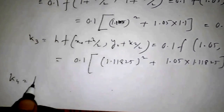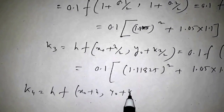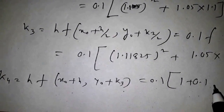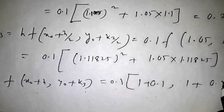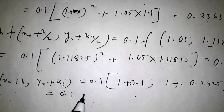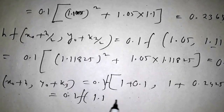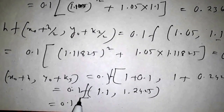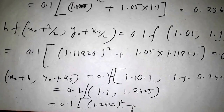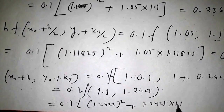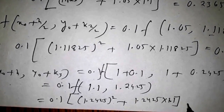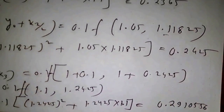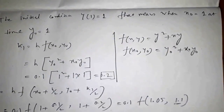Last, we find k4 = h·f(x₀ + h, y₀ + k3). Here x₀ + h = 1 + 0.1 = 1.1 and y₀ + k3 = 1 + 0.2425 = 1.2425. So k4 = 0.1·f(1.1, 1.2425) = 0.1·(1.2425² + 1.1×1.2425), giving k4 = 0.2910556.